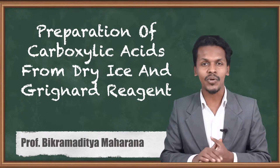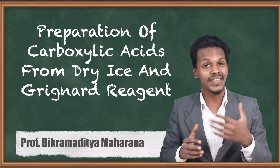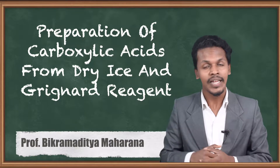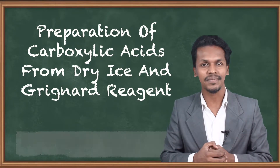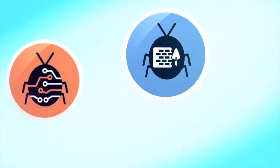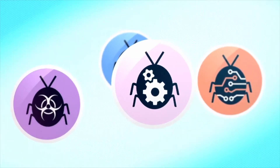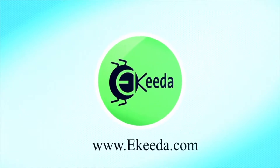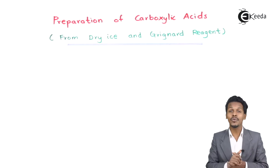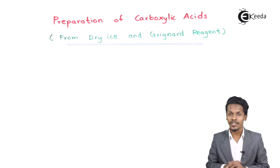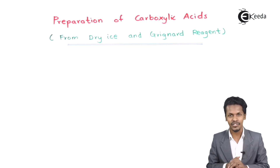So now in this topic we are going to discuss how we can prepare carboxylic acid by the reaction of dry ice with Grignard reagent. So what is the general reaction for that? Let me discuss it in this lecture. We are going to talk about how we can prepare carboxylic acid by the reaction of dry ice with Grignard reagent.